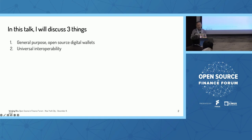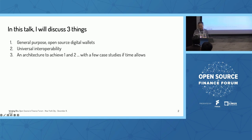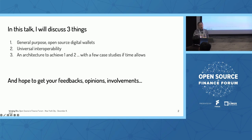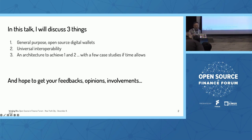The second is universal interoperability, and what does that mean and why it's very important. And then, finally, we can talk about how to achieve that as an architecture. There are a few case studies — if we have time, we'll go through those as well. I hope to get your feedback, opinions, and potentially interest and involvement — so that will be my purpose of this talk.